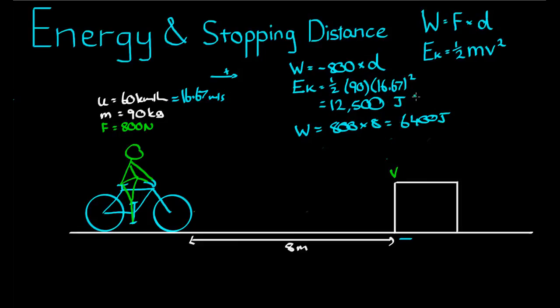So it started off with 12,500 joules worth of energy, caused by motion in that direction, and it had 6,400 joules worth of energy done, in the opposite, worth of work done in the opposite direction.